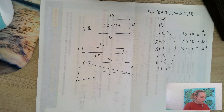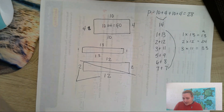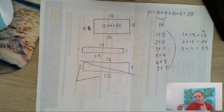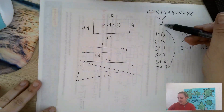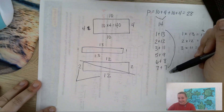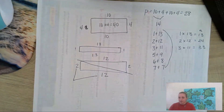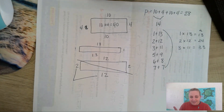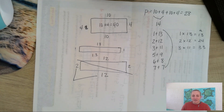Remember: when you're figuring out same area, different perimeter, you're going to use your factors. When you're figuring out same perimeter, different area, you're going to split your perimeter in half and think of ways to add to get that number, because the perimeter formula is addition. The area formula is multiplication. That's the difference. Good luck. Rewatch these last two videos if you need to.